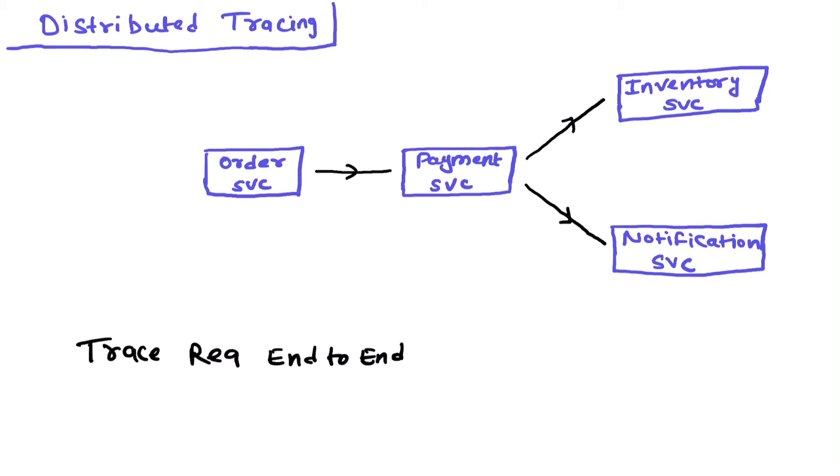Let's take an example. You have an e-commerce store where you have different services deployed as separate modules. At the front end, you have an order service which accepts the order. Once the order is placed, it calls a payment service to initiate the payment for that particular order. Once the payment is complete, it will update the inventory that a particular order is not available for sale now, and it will also call notification service in parallel to send a message or email to the customer that your order has been successfully placed and the payment is successful.